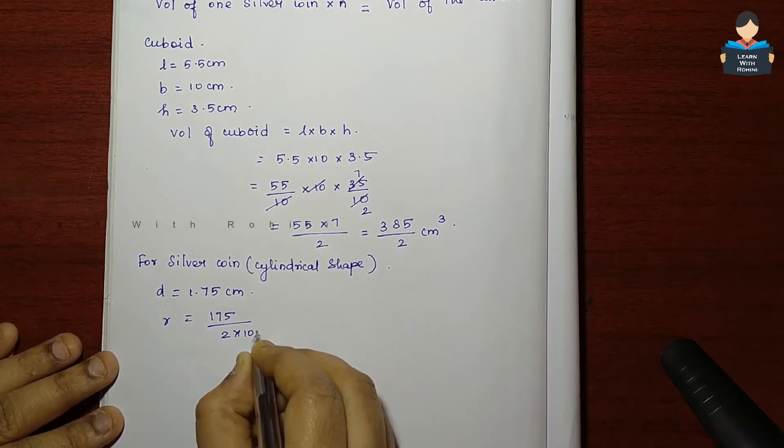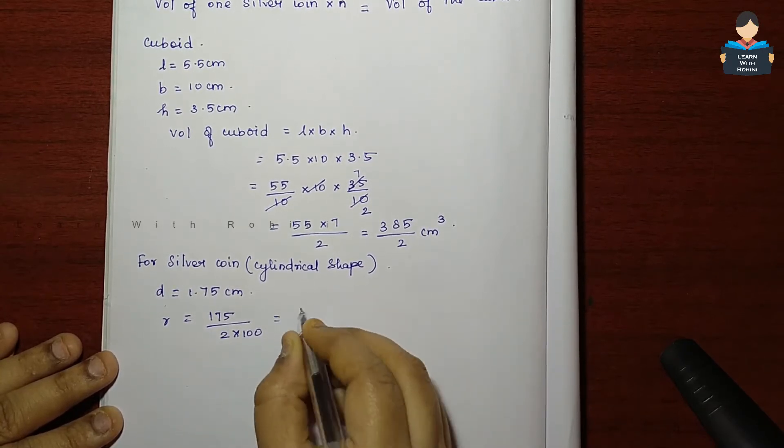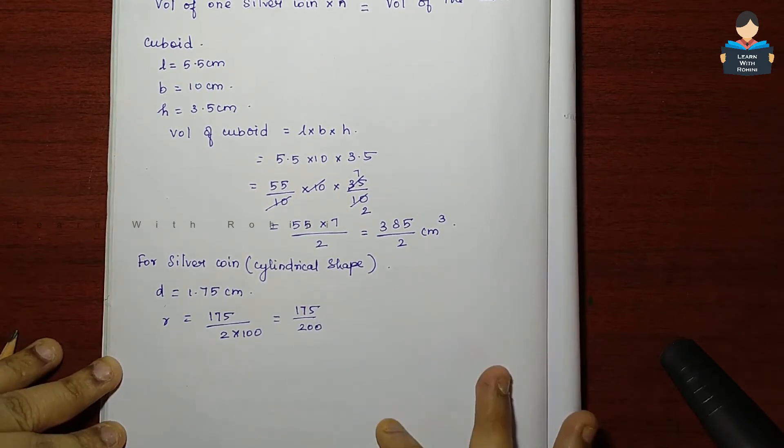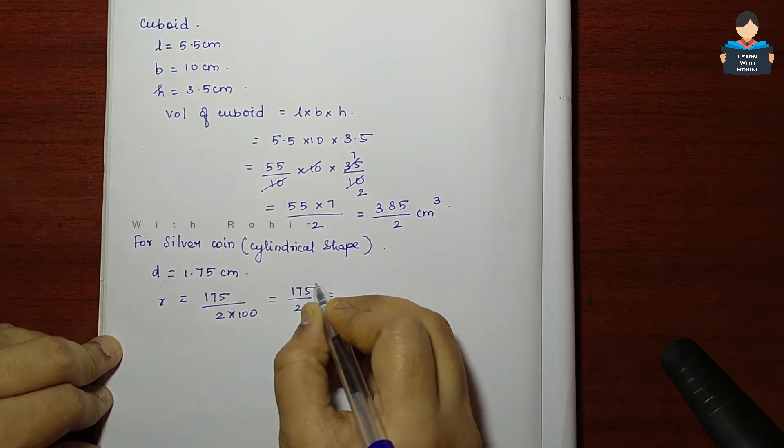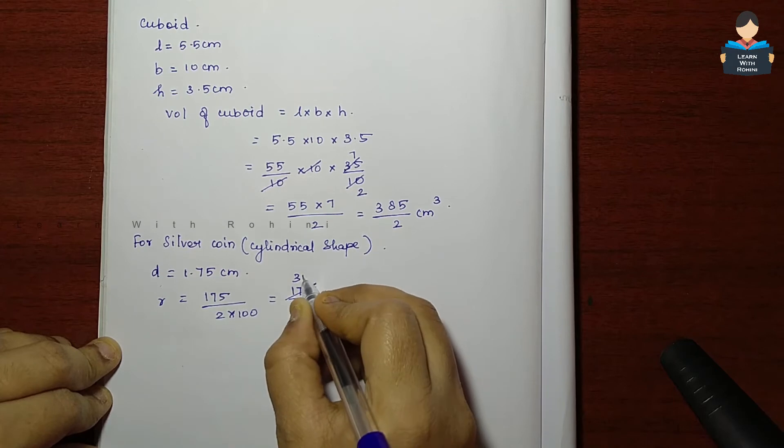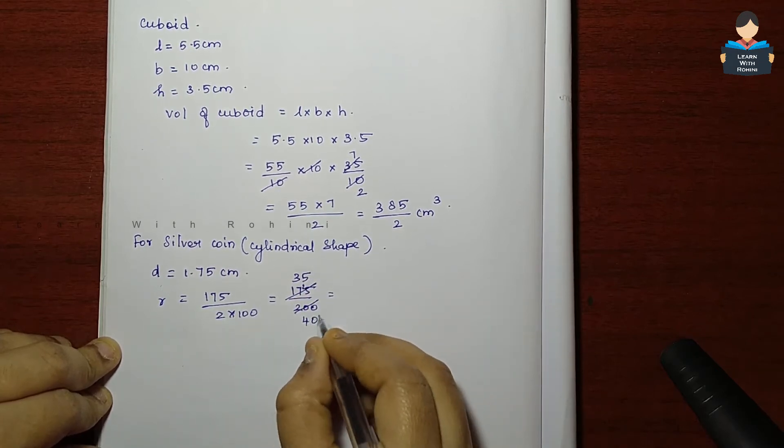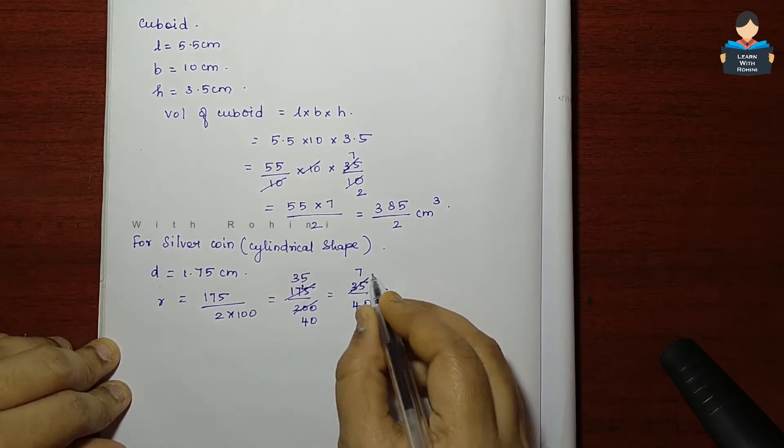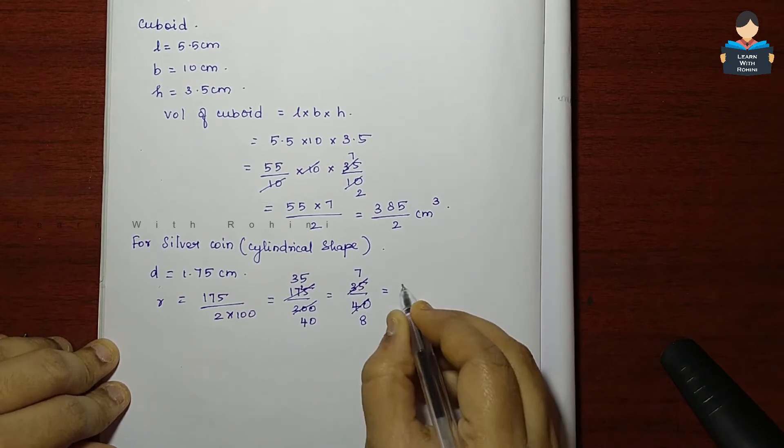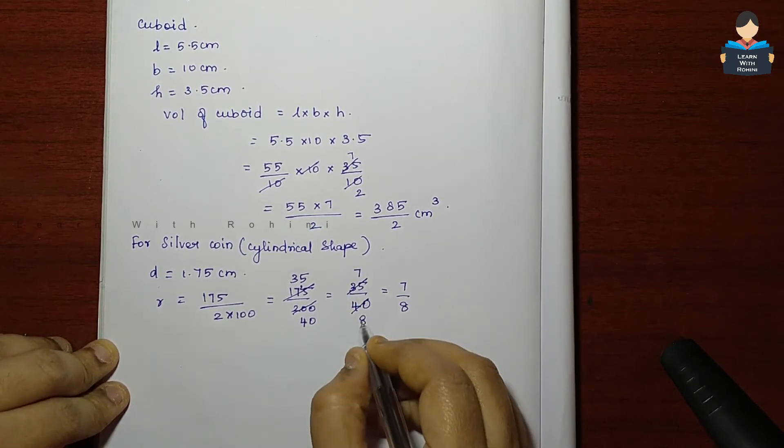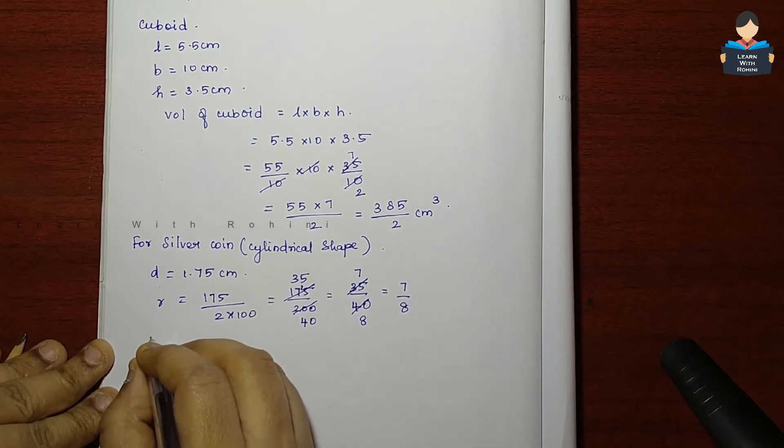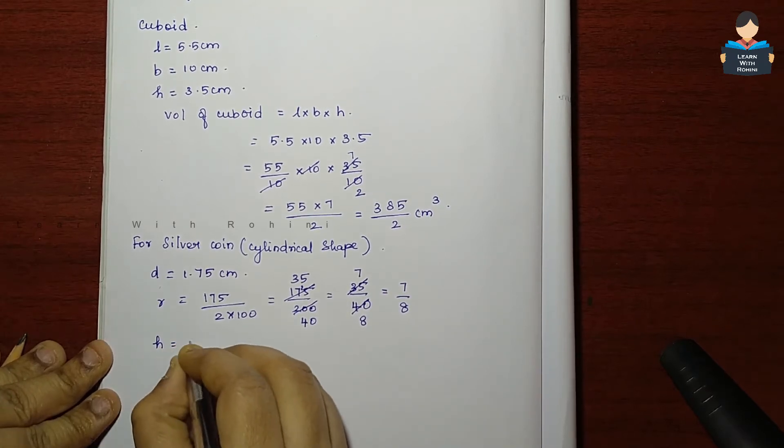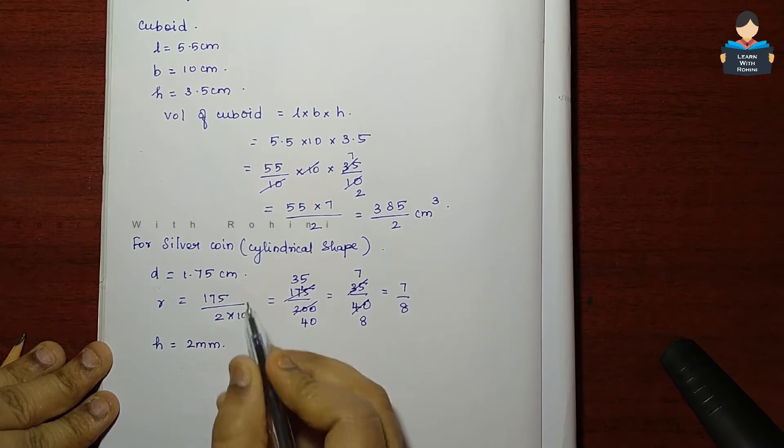The silver coin diameter is 1.75 cm, so radius is 1.75 divided by 2. Converting to 175 by 200, simplifying: 5 into 35 gives 35 by 40, which is 7 by 8. Now we have to take the height of the coin which is 2 mm.